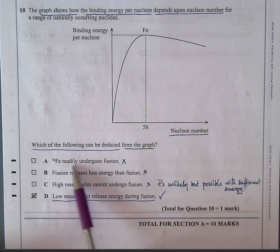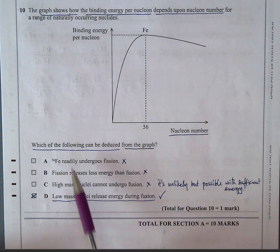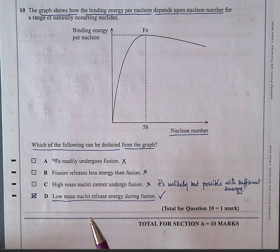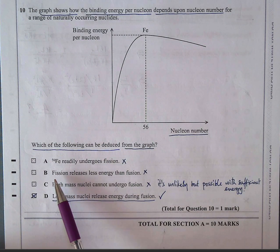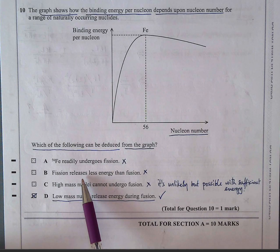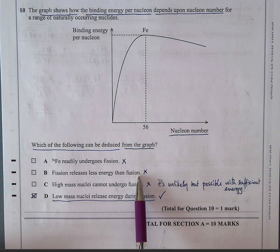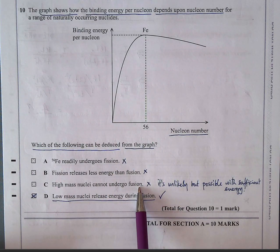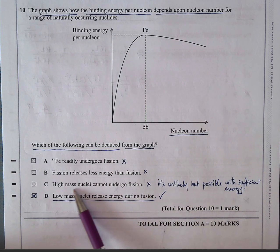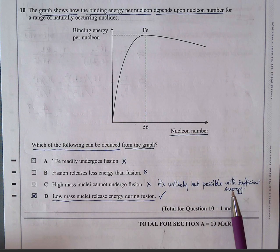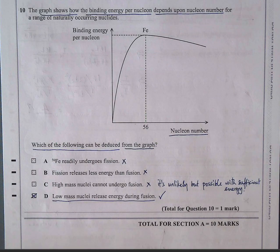So A, iron readily undergoes fission. No, because it's already very stable, so it's not going to readily undergo any change at all. The higher you are on the curve, the more stable you are, so less likely you are to change. Fission releases less energy than fusion. That's not true. Fission releases a larger amount of energy than fusion. But per nucleon, fusion is more efficient. And high mass nuclei cannot undergo fusion. No, it's unlikely. High mass nuclei don't want to get bigger. It's unlikely. But it is possible with sufficient energy. Otherwise, they wouldn't have been formed in the first place. So that's the end of the multiple choice section.